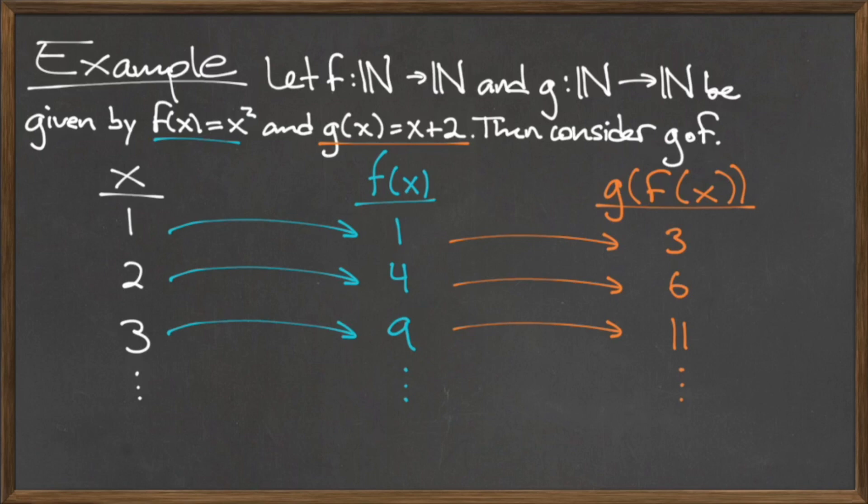When x is equal to 2, f of 2 is 2 squared, which is 4, which we then plug into the function g. g of 4 is equal to 4 plus 2, which is 6. So the composition g compose f of 2 is equal to 6.